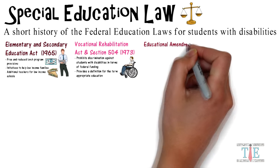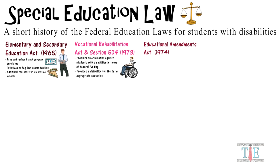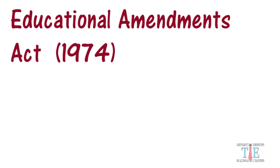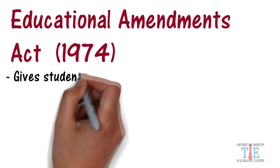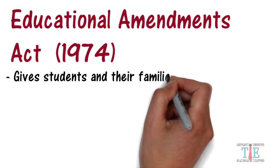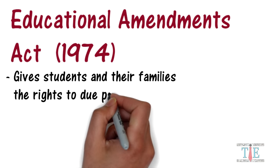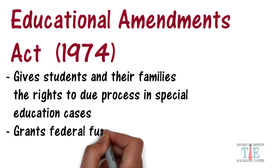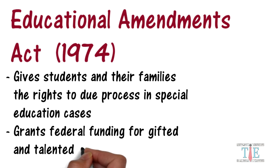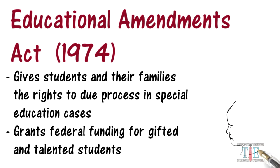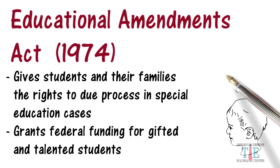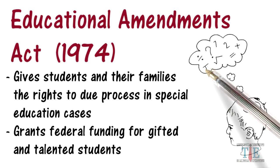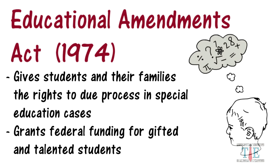Next, the Educational Amendments Act of 1974. It gives students and their families the right to due process for special education cases, and it supports federal funding for gifted and talented students. The Office of the Gifted and Talented was initially housed within the U.S. Office of Education and given official status. Federal funds are given to states for programs with exceptional learners.